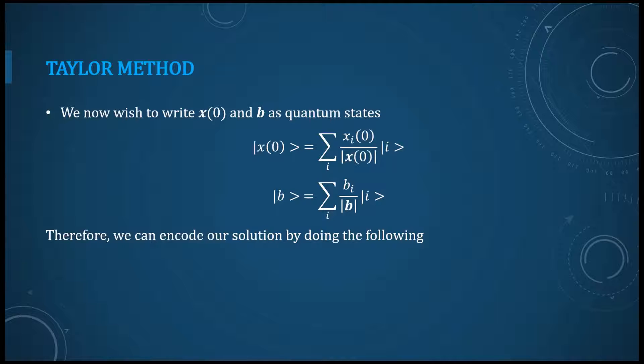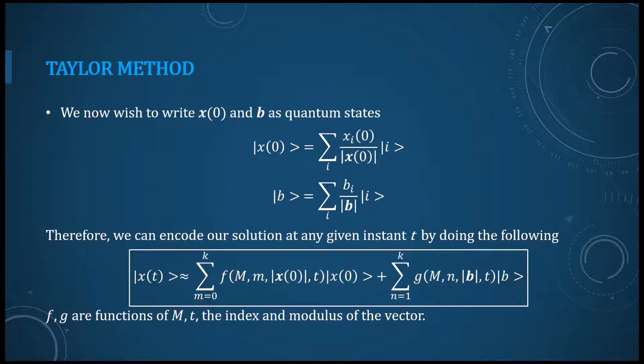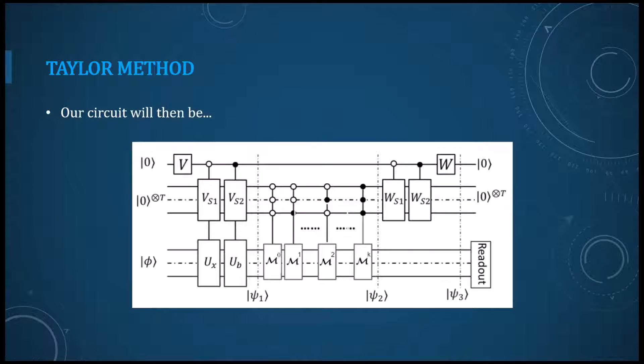Then we can encode our solution by doing this here. You can essentially write two functions, the function f and also the function g, that will give us an approximate solution for our state x of t that depends on the state x zero and also the state b.